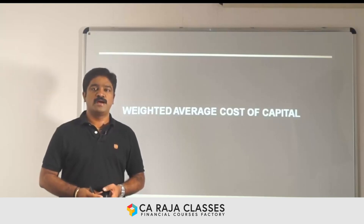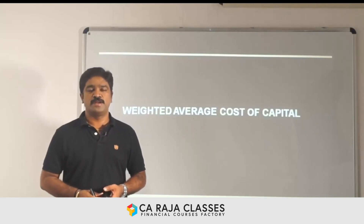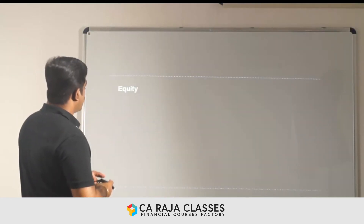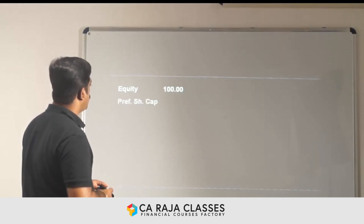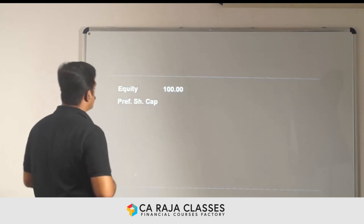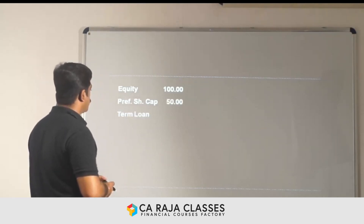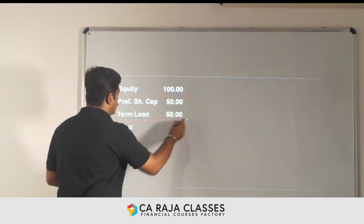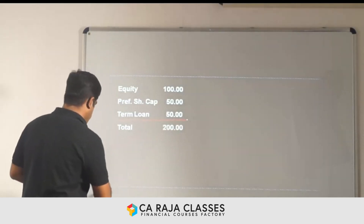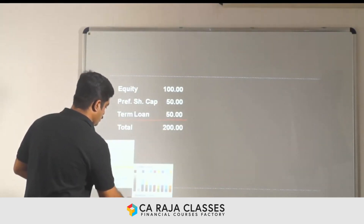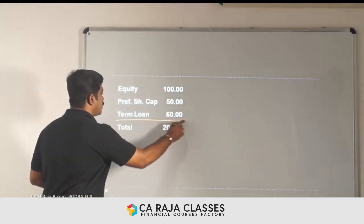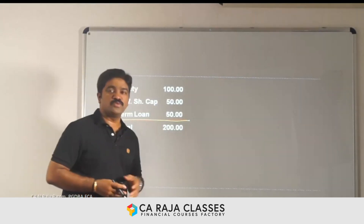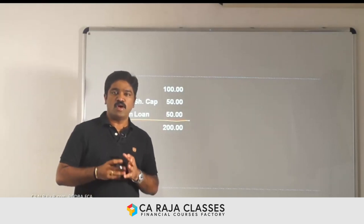Let's move on to the next critical topic: weighted average cost of capital. To understand that, let's have some numbers. Let's say I start a business where I bring in equity of 100 million, I'm also borrowing through preferential capital 50 million, and there is a term loan of 50 million. So the total funds raised are 200 million. The key point to understand is that none of these funds come free into the business — all of them have a cost.